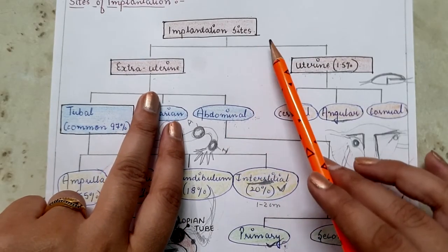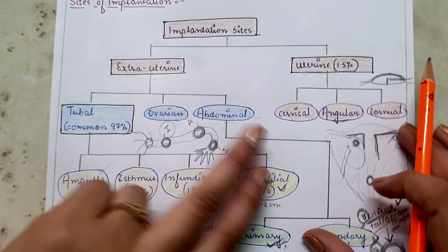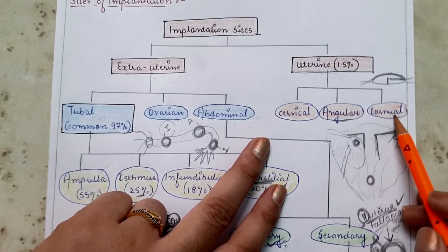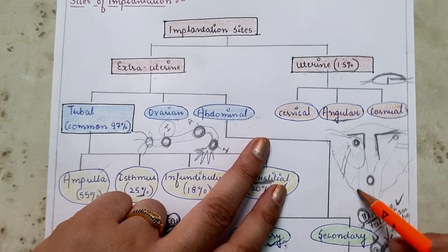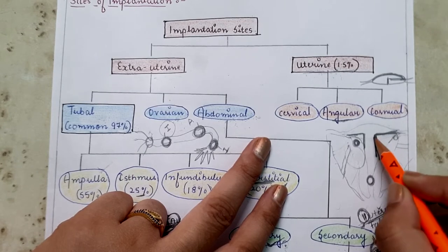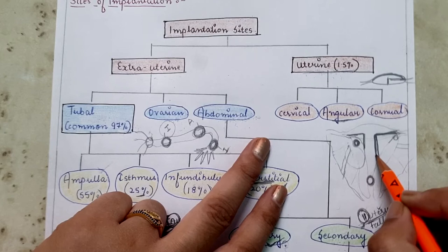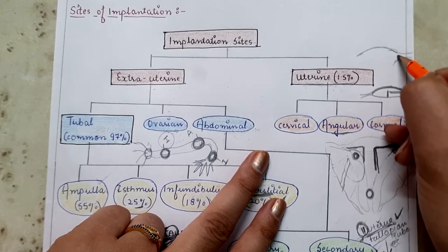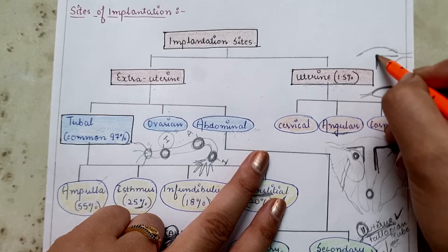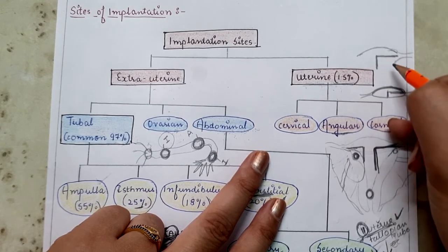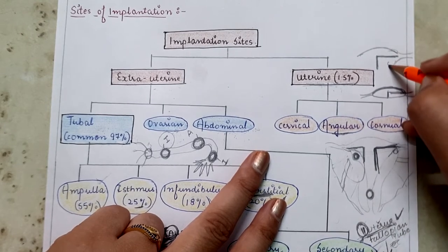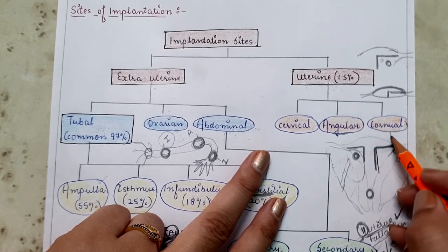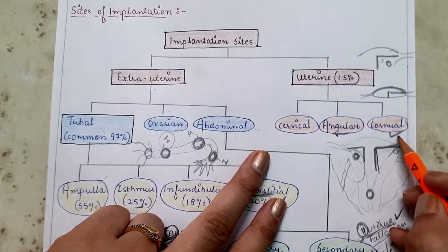Under intra-uterine (uterine) ectopic pregnancy there are three sites: cervical, angular, and cornual. The cornua is the superior lateral angle of the uterus where the fallopian tube opens. If the fertilized ovum implants there it is known as cornual pregnancy, which mostly occurs in bicornuate or unicornuate uterus.